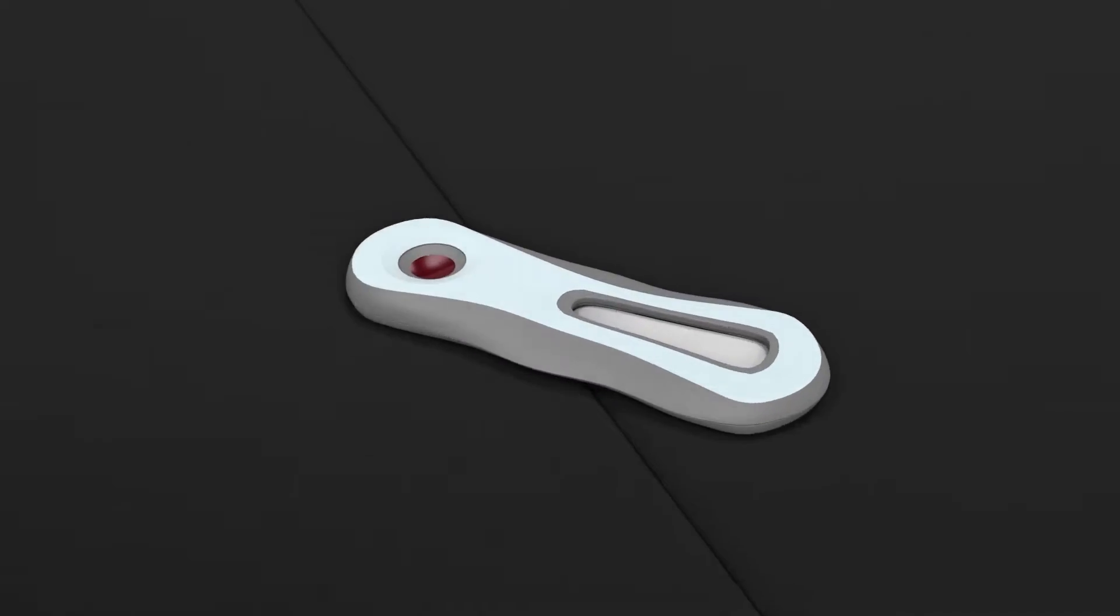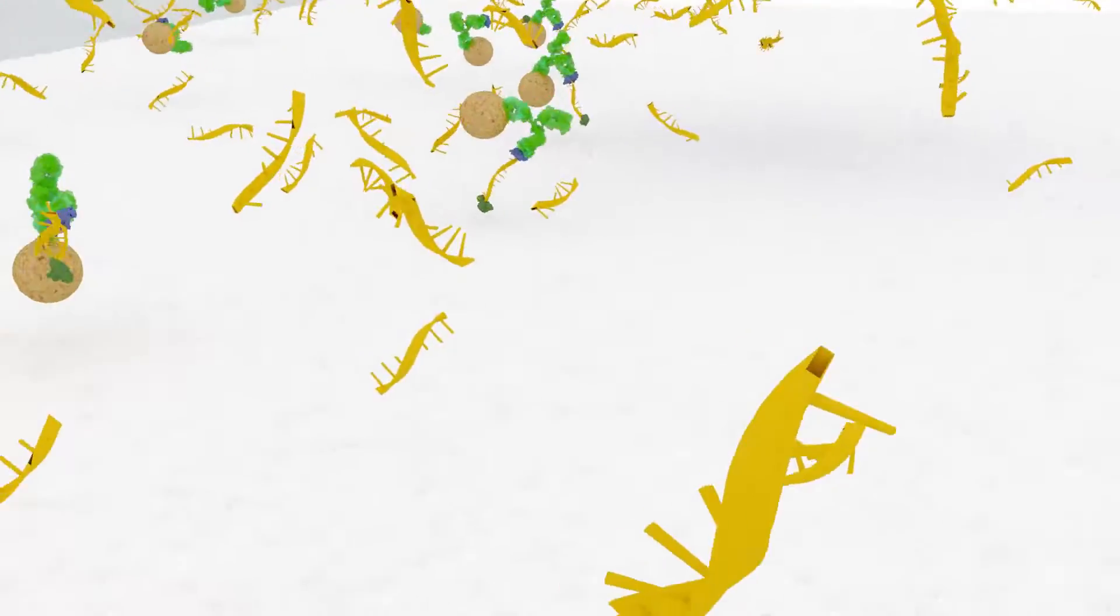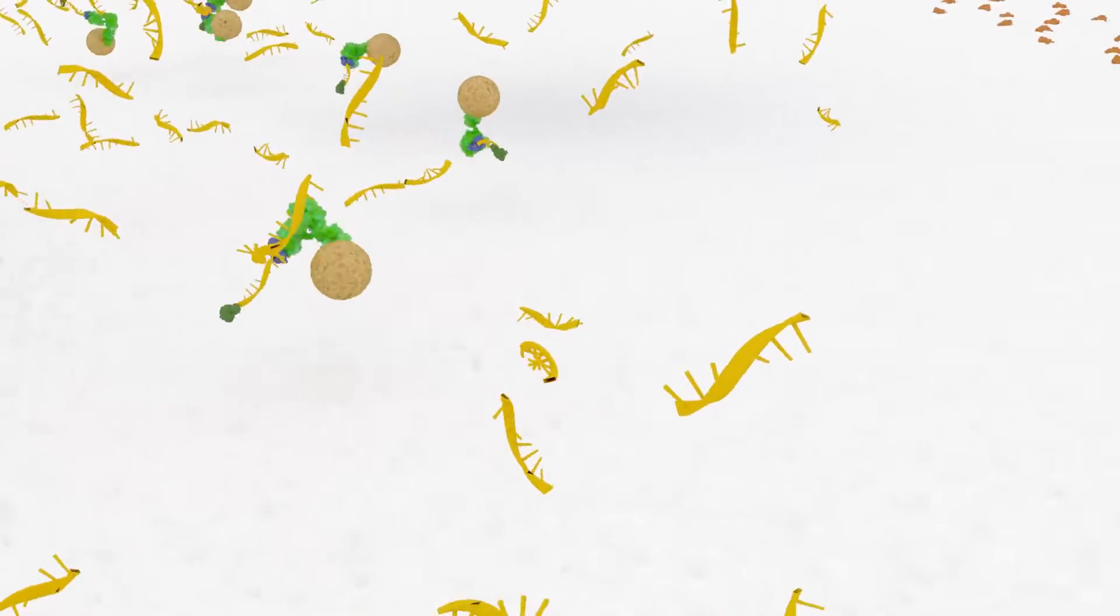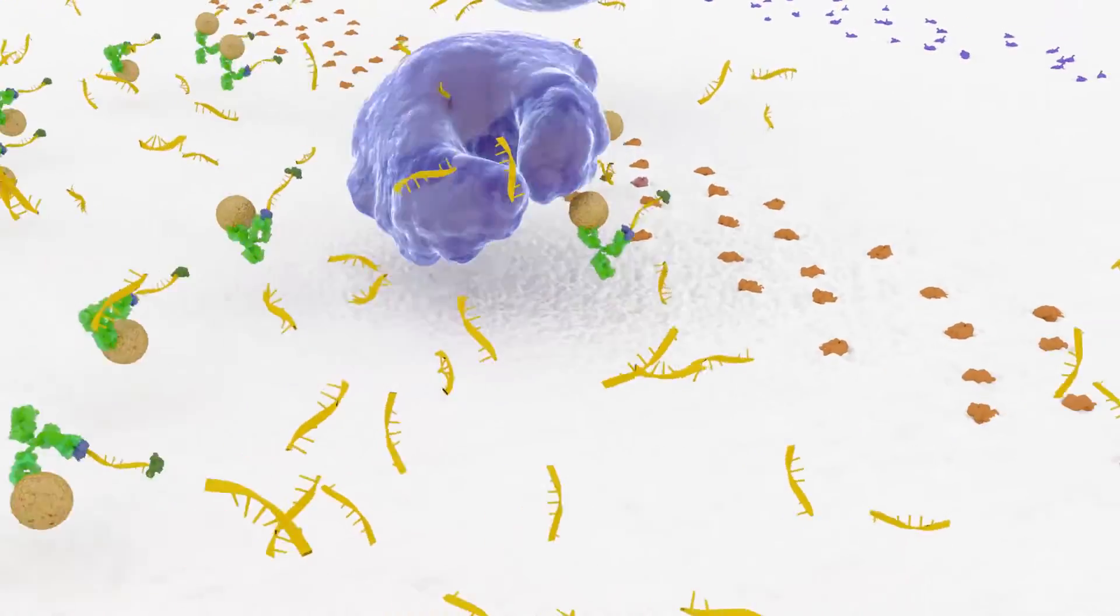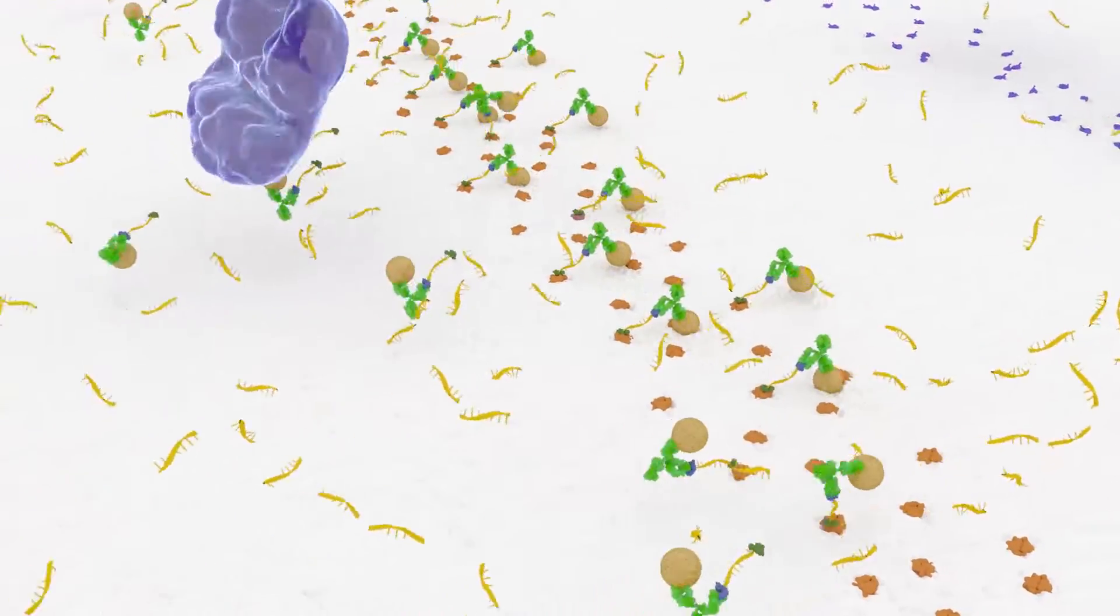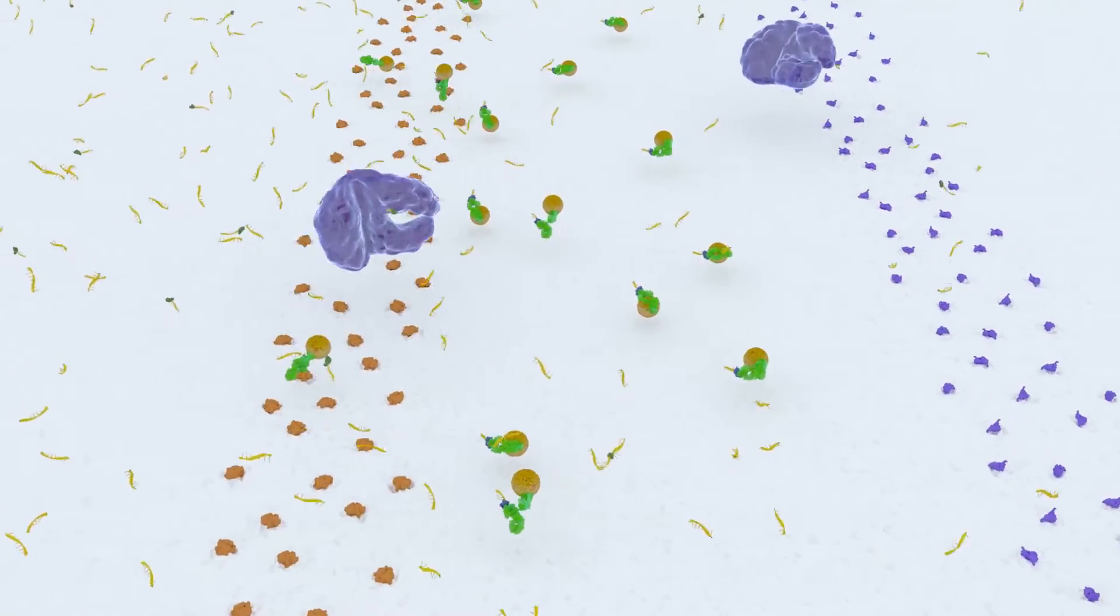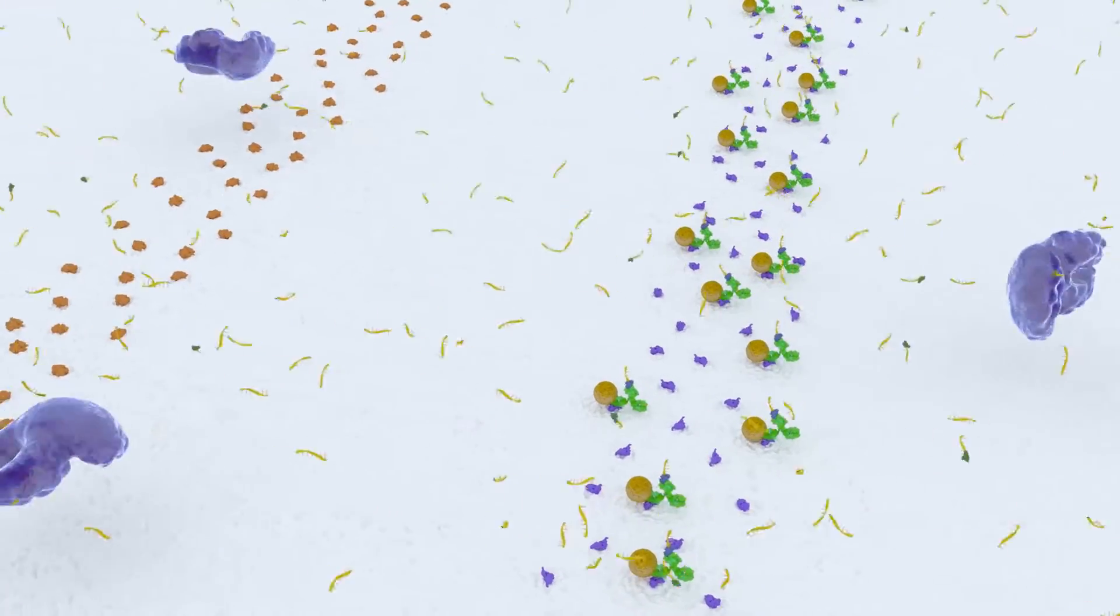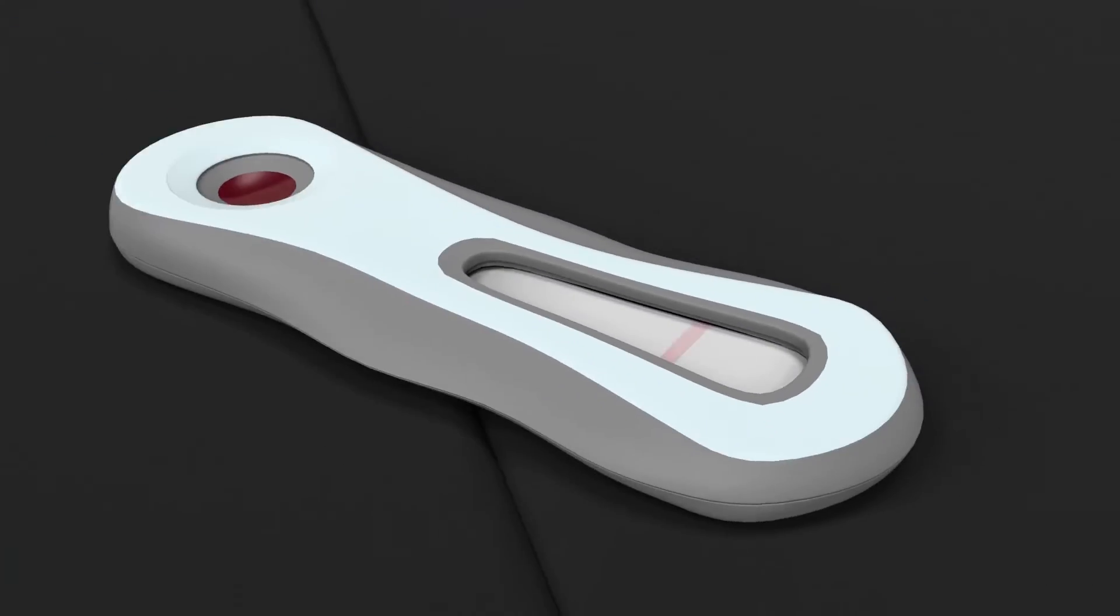The sample is then applied to a commercial flow detection system. If the sample is negative for flu, the reporter remains intact and collects at the first detection line. If the sample is positive for flu, it collects at a different location, making a diagnosis easy to spot.